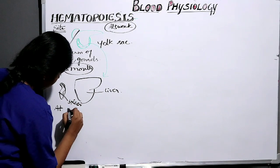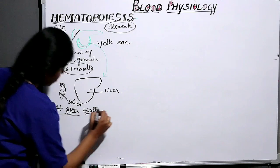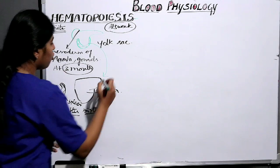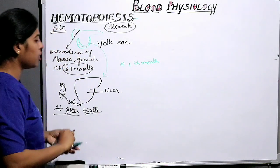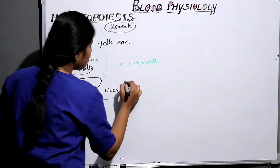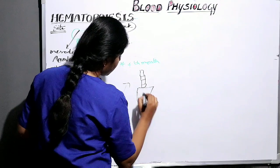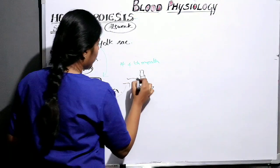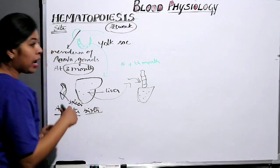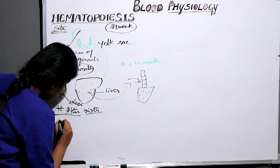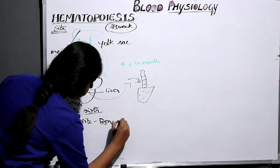Then after birth, from the fourth month, the stem cells start migrating to the vertebra and sacrum. So at the end of the ninth month or after birth, the major site of hematopoiesis is the bone marrow.